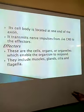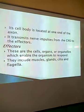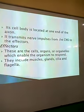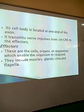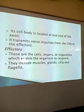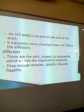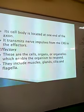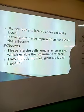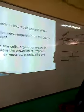Effectors are the cells, organs, or organelles which enable the organism to respond. They include muscles, glands, cilia, and flagella. We have now seen the receptors, the effectors, the types of neurons, and how they carry out their activities and are coordinated to bring about a specific change. With that, we come to the end of our lesson. Thank you for listening.